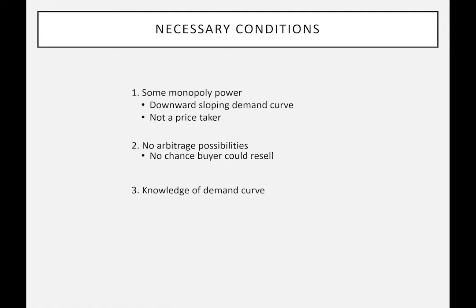The third condition is that the firm must have some knowledge of the demand curve and be able to figure out who belongs in which group. One important point is that what appears to be price discrimination — two prices for the same good or service, or the same product sold to two different groups — frequently turns out not to be price discrimination at all.